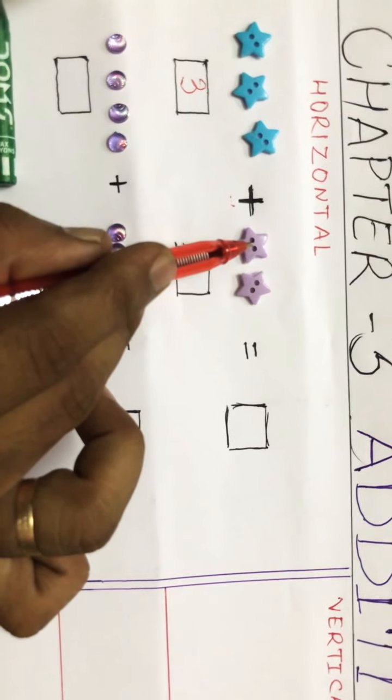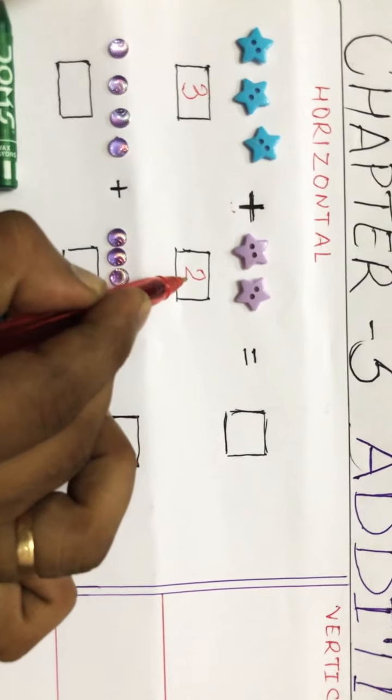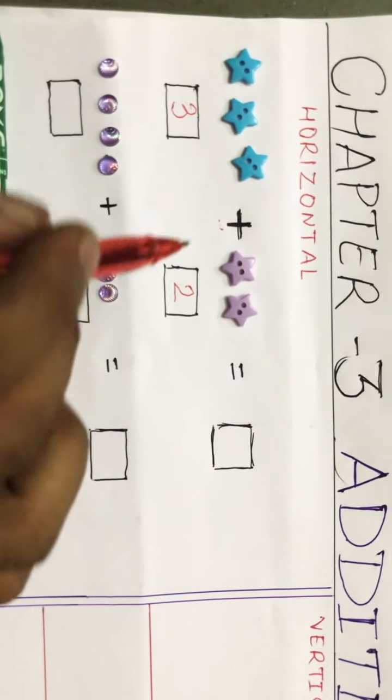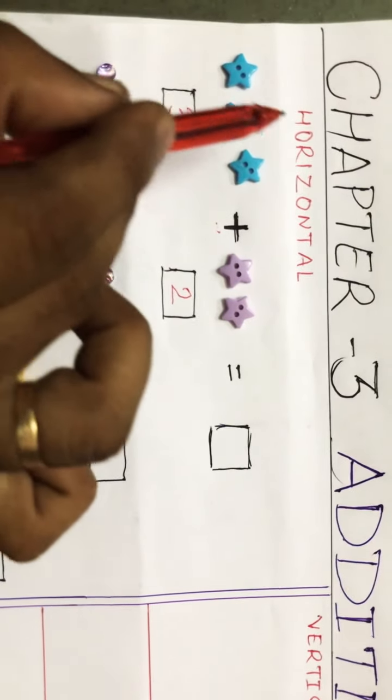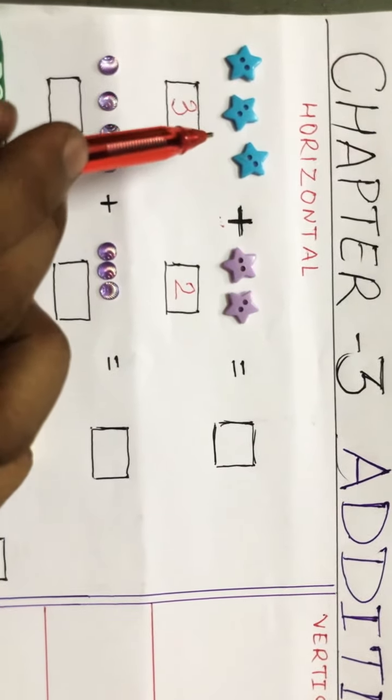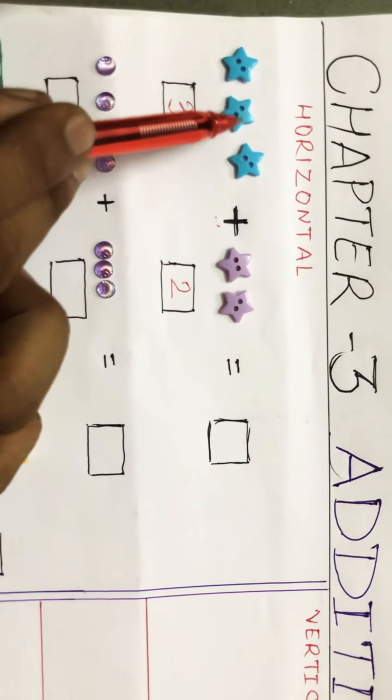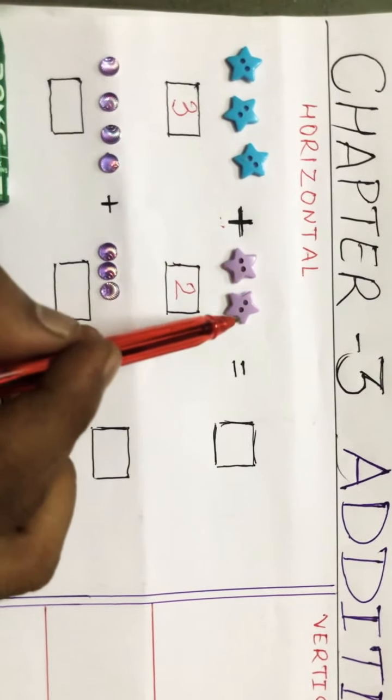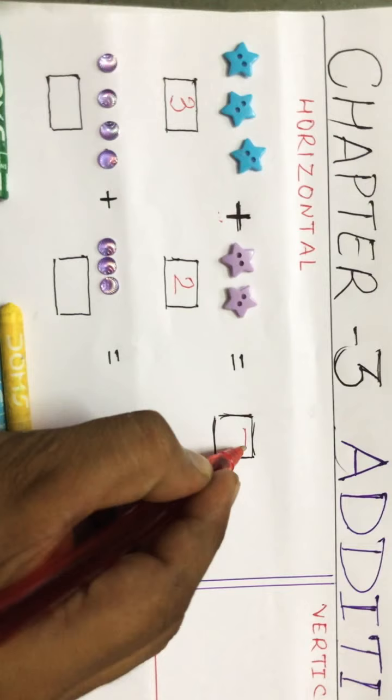And count these stars also. How many are there? One, two. So write here two. As I have told you that for addition we'll put things together. Now we will count the stars together: one, two, three, four, and five. So your answer will be five.